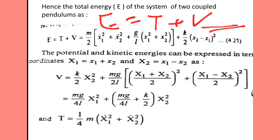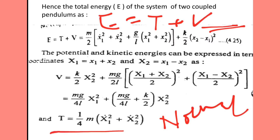The potential and kinetic energies can be expressed in terms of normal coordinates. The first normal coordinate is the addition of the two displacements, and the second normal coordinate is the subtraction of the respective displacements of the two bobs in the coupling. Potential energy V in terms of normal coordinates is: V = (Mg / 4L) * x1^2 + (Mg / 4L + k/2) * x2^2. Kinetic energy T = (M/4) * (x1_dot^2 + x2_dot^2).